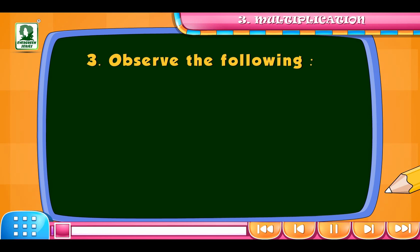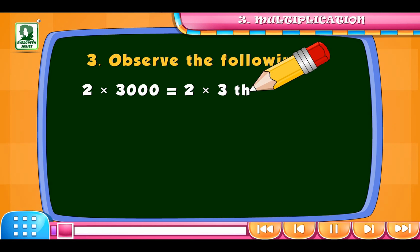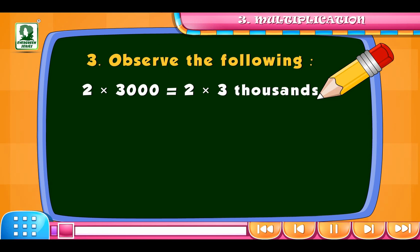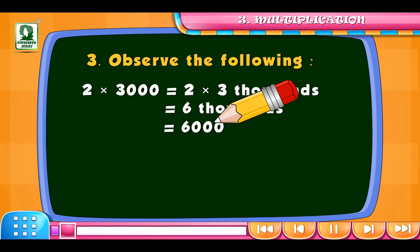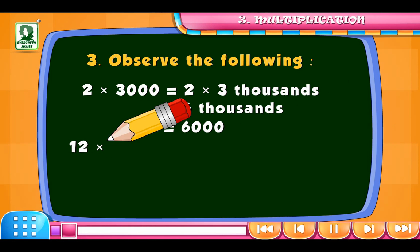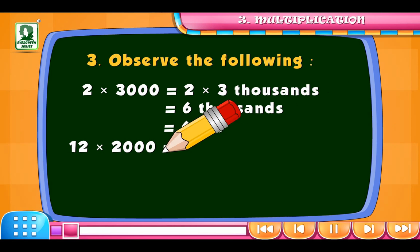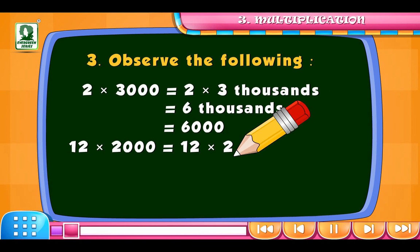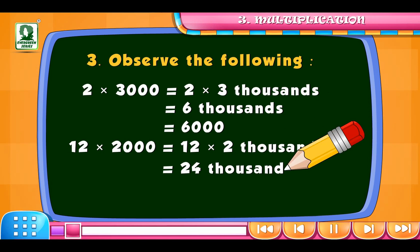Similarly, we will multiply numbers with thousands. Let's multiply 2 by 3000. We can write: 2 multiplied by 3000 is equal to 6000. Another example: 12 multiplied by 2000 is equal to 24000.